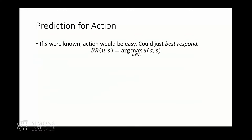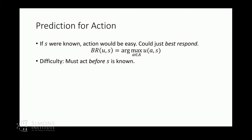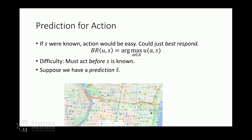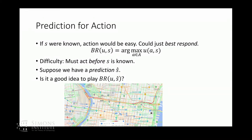What should you do? If you knew what the state of the world is — what this vector s was — it's clear: you should best respond, choosing the action that maximizes your utility given the state. The difficulty is that you've got to act before the state is known. Somehow we need to predict the state and use that to act. For example, I typed into Google Maps asking for a traffic report in Philadelphia not now but next Monday — a projection into the future of what Google thinks traffic will look like. It's not necessarily correct; it's a prediction. Is it a good idea to plan my route now as if this is the traffic? Or should I spend time studying Google's prediction algorithms and come up with a more clever strategy?